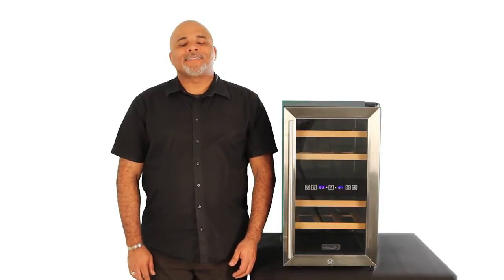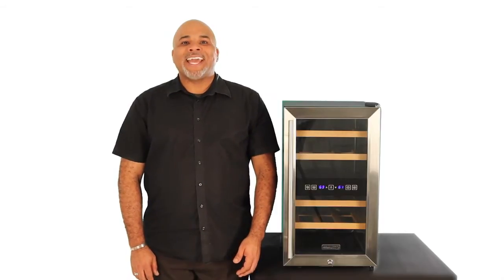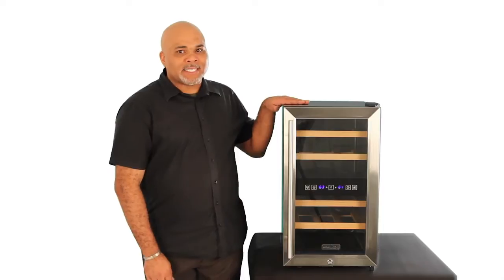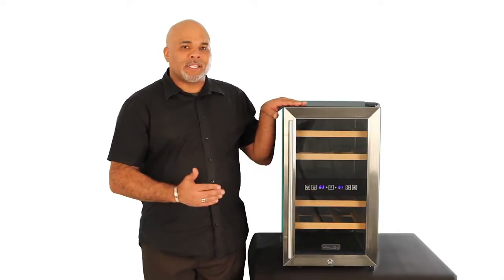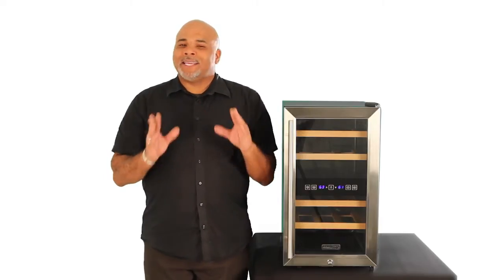Hi, I'm Scott and this is the Coldfront TWR 187ESS 18 bottle dual zone wine cooler. The TWR 187ESS features thermoelectric cooling, which makes it quiet. You'll be able to use it in any room of your home.